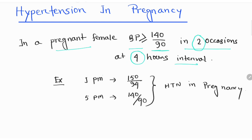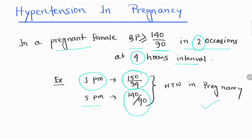Example: at 1 PM, BP is 150/94, and at 5 PM, BP is 140/90. Since the first reading is more than 140/90 and the second is equal to 140/90, this patient is called Hypertension in Pregnancy.